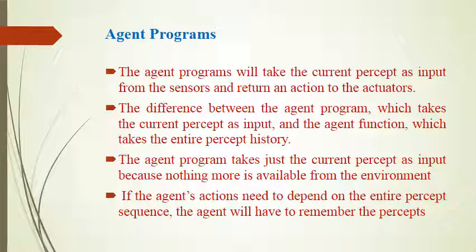An agent program takes the current percept as input from the sensors and returns an action to the actuators. The difference between the agent program and the agent function is that the agent program takes the current percept as input, while the agent function takes the entire percept history. If the agent's decision needs to depend on the entire percept sequence, the agent will have to remember the percepts.